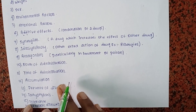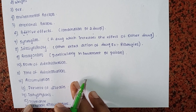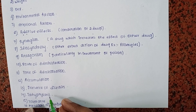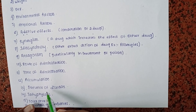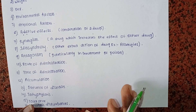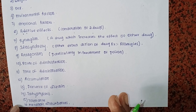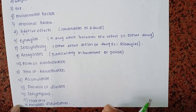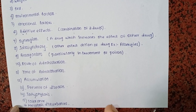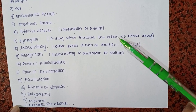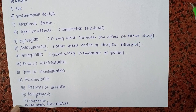Next, tachyphylaxis, which increases the action of the drug. Next, tolerance. Next, metabolic disturbances. These are all the posology factors. So there are mainly 16 factors which affect posology.